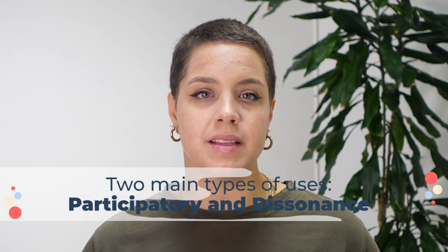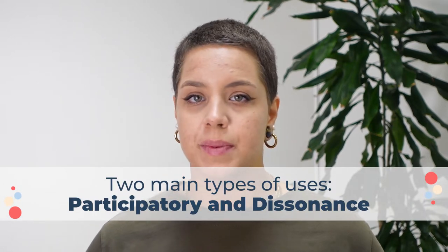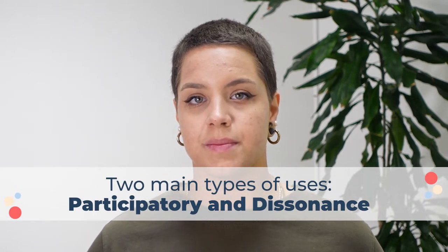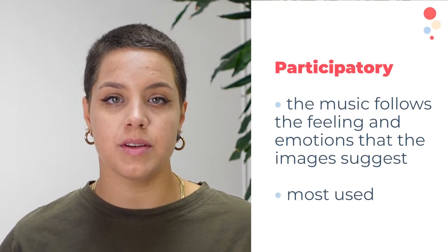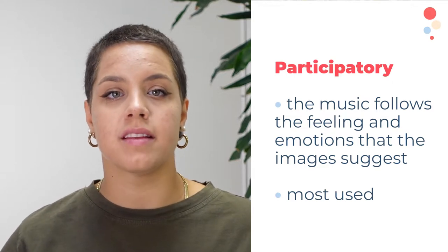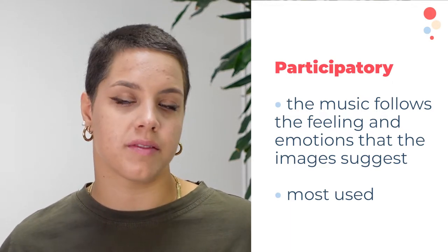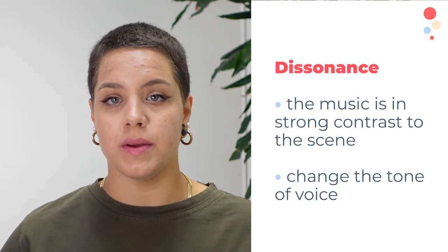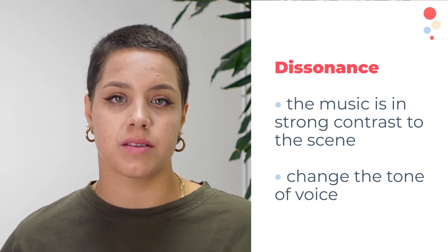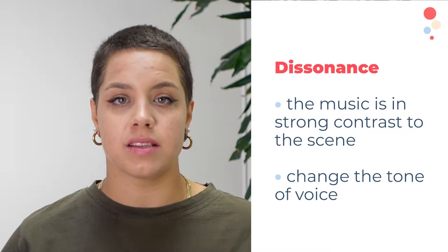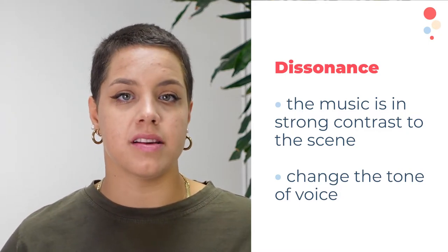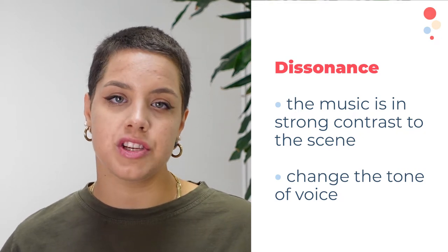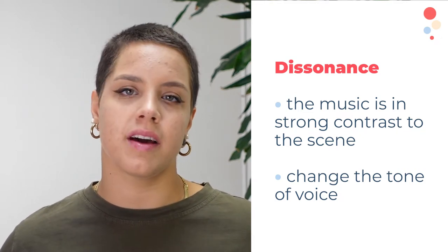We need to distinguish two main types of uses: participatory and dissonance. Participatory is when the music follows the feeling and the emotion that images suggest — we can find this type of use 90% of the time. Dissonance is when the music is in strong contrast to the scene, choosing a song that goes in the opposite direction of what we see. This type of use can completely change the tone of voice of our final product.